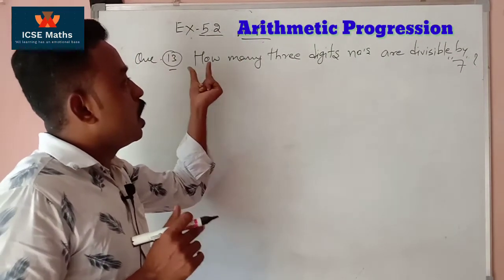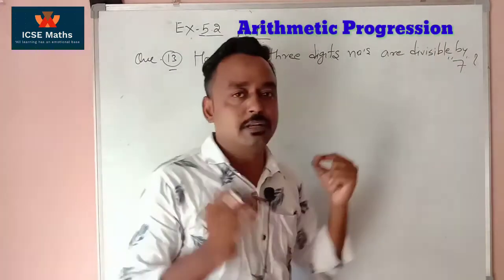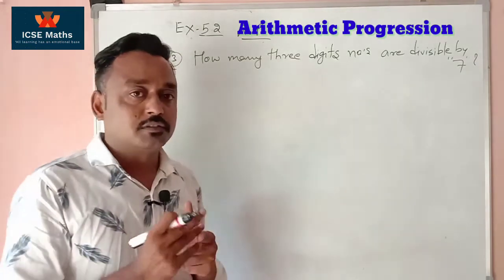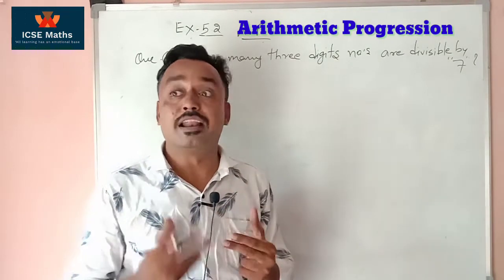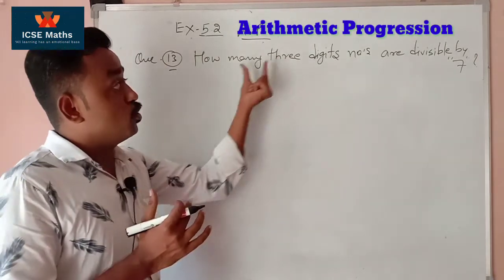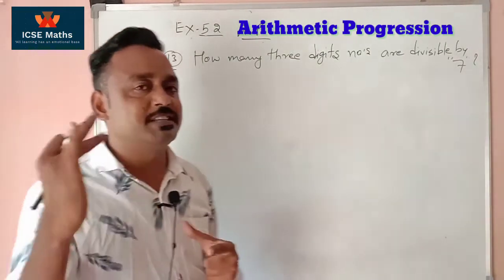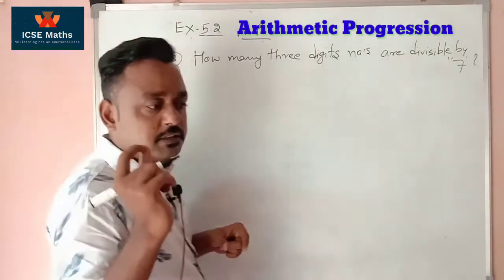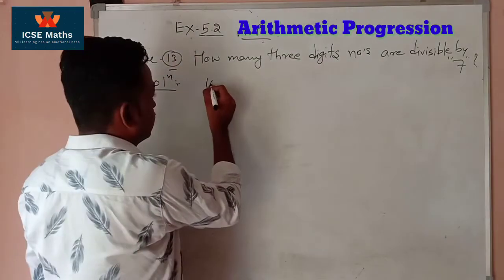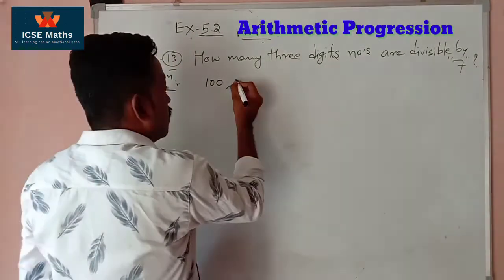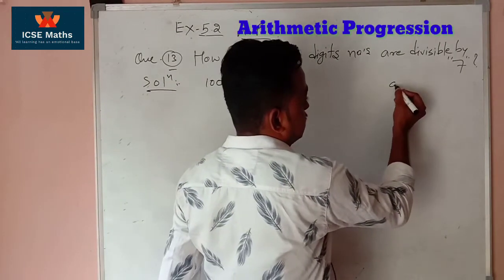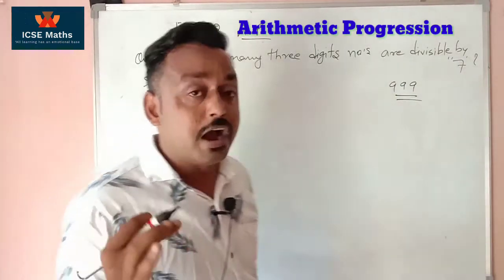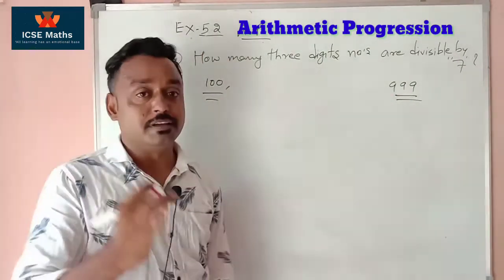Now question number 13 of exercise 5.2: how many three-digit numbers are divisible by 7? First, identify the smallest three-digit number, which is 100, and the biggest three-digit number is 999.